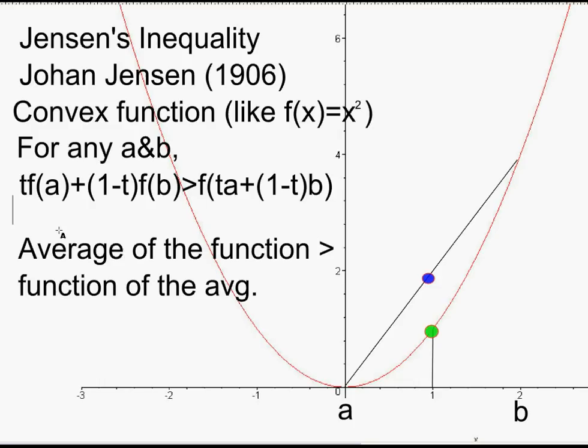All Jensen would say is if t is a half times, so take a half times f of a. Well, a is 0, f of a is 0 squared, so that's times 0. So, let's do times 0 here, plus 1 minus t, 1 minus a half. Well, that's also a half, 0.5, times f of b. Well, b is 2, f of b is 2 squared, so that's 4. And Jensen just said, well, a half times 0 is 0, half times 4 is 2.